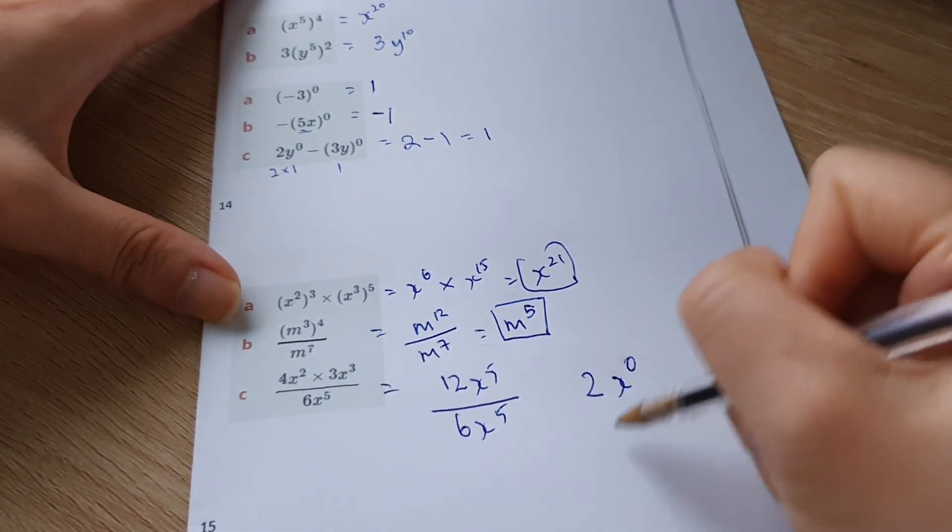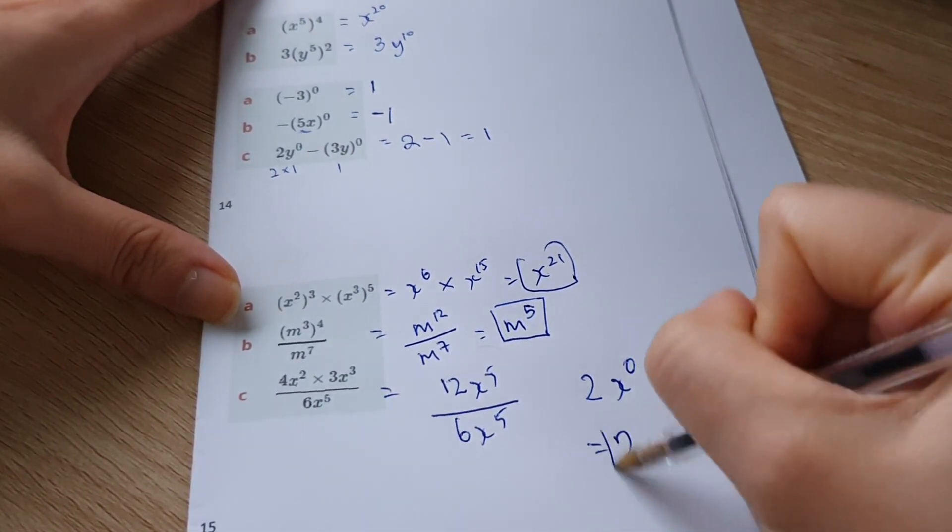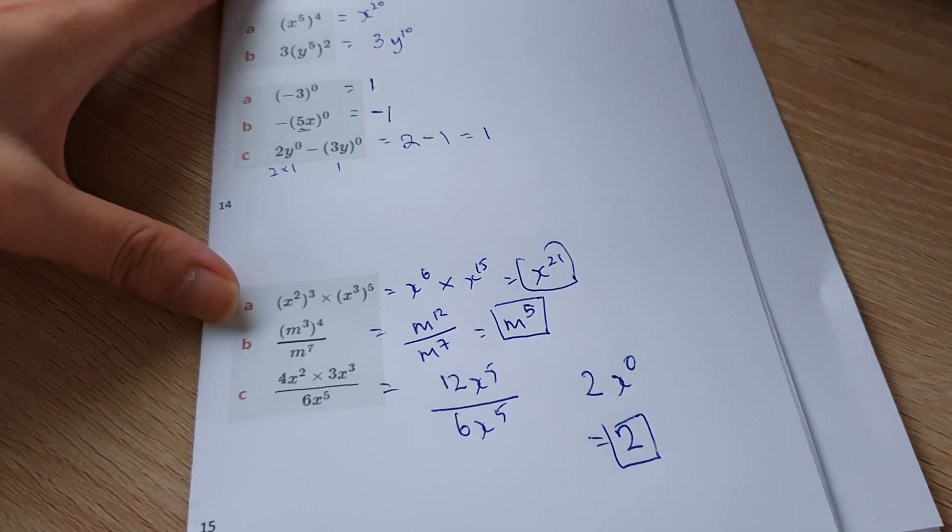Now, x to the power of zero is going to be one. So two times one, that's just going to be the number two. And that's all there pretty much is to it.